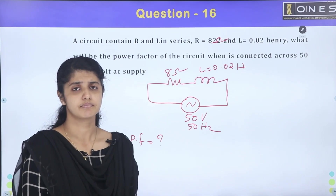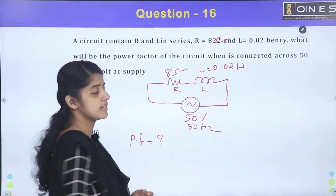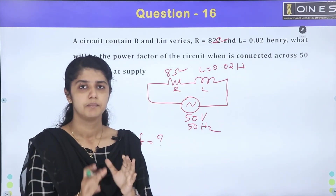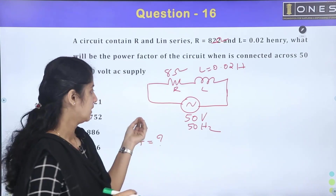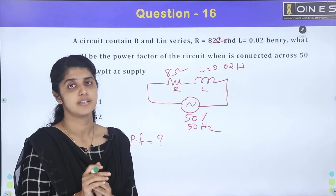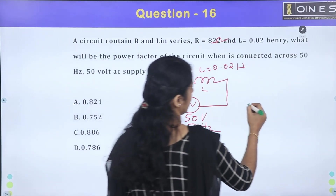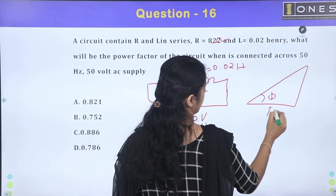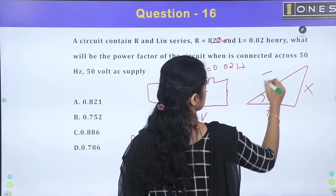How do we solve this? We have resistance, inductance, and capacitance. We can connect with the impedance triangle. In the impedance triangle, this is R, this is X, and this is Z.